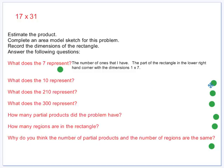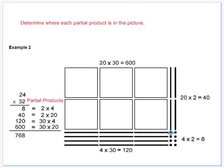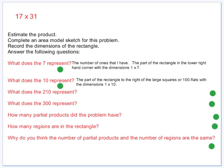What does the 10 represent? The part of the rectangle to the right of the large squares or 100 flats with the dimensions of 1 by 10. So we're only going to have one 10 long on the right along with our units over here. So we would cut that one out, and we would cut this one out up here. So we'd have one 10 long, and then we'd have 7 units. There's two partial products so far.